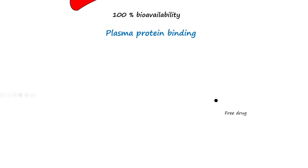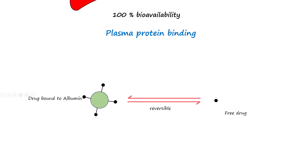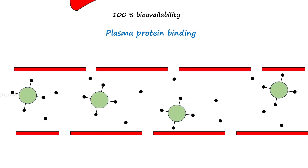So the bioavailability of IV drugs is 100%. Once the drug enters the bloodstream, a percentage of the drug is bound to plasma proteins and the rest is unbound. The unbound part is the pharmacologically active form of the drug. Only the unbound drug can cross cell membranes, reach target tissues, and exert its therapeutic effects.